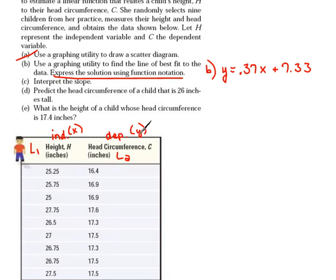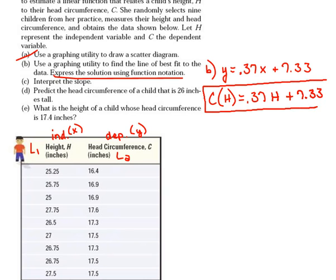Now this said express the solution using function notation. Well normally we talk about the function in terms of x. Well we don't have really x in our problem. This is an h instead of an x. So let's write this as better notation circumference in terms of height. We're going to write that as c of h equals 0.37. Now remember instead of x's we used h's and then plus 7.33. So this would be a much better representation of function notation.